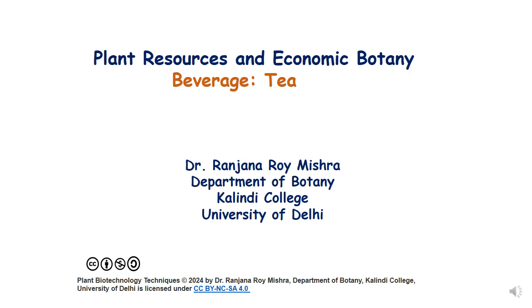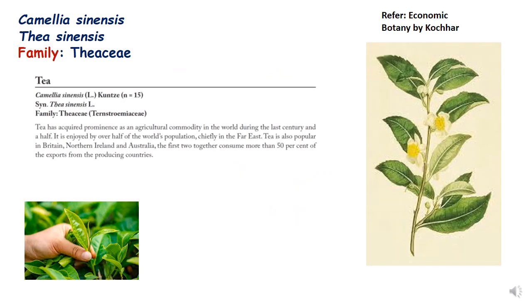In this lecture we will be discussing tea, which comes under beverage and plant resources and economic botany. The botanical name of tea is Camellia sinensis, also called Thea sinensis, and the family is Theaceae. Tea has acquired prominence as an agricultural commodity in the last century and is very popular in Britain and Northern Ireland, which consume more than 50% of the exports from producing countries.